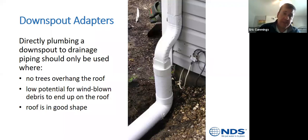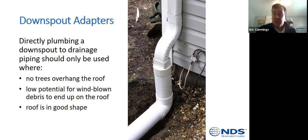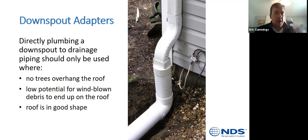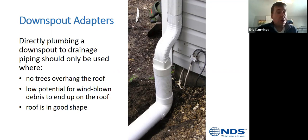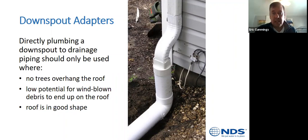Downspout adapters are probably what I see most when guys are tying downspouts to get them underground to a different point on the property. A common question is whether to put the Y right-side up or upside-down — some townships require one way, but this is a suitable solution however you're comfortable hooking it up, when there are no overhanging trees and the roof's in good shape.